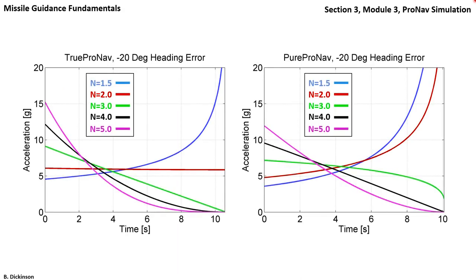What about acceleration for each value of the navigation gain? Well, here it is for true on the left and pure on the right, five different values of N starting from 1.5 to 5.